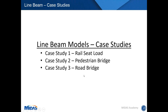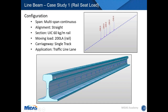Moving on to the first group of case studies — in each case study I've picked a specific feature to demonstrate. The first case study is a rail seat load model, where the aim was to calculate the maximum reaction at a sleeper or rail pad under the rail. This is a 2D line beam model where each node represents a sleeper or rail pad, and a 200LA rail load was applied.